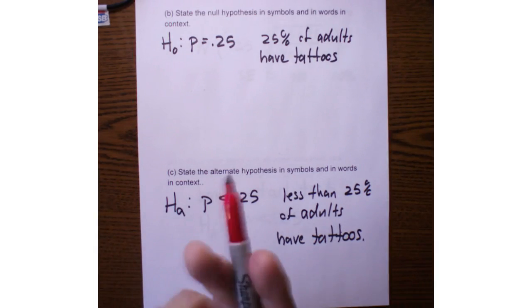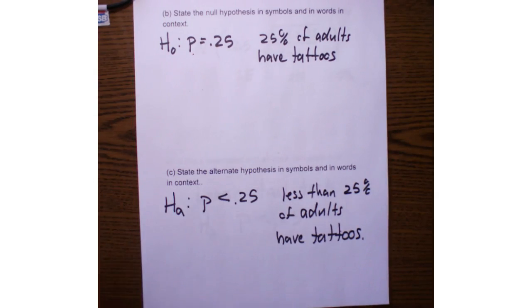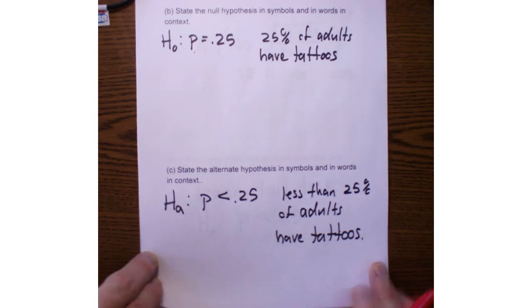My null hypothesis states that the population proportion is equal to 0.25, where in words, 25% of adults have tattoos. My alternate hypothesis is that this population proportion is actually less than 0.25, which means that less than 25% of adults have tattoos.